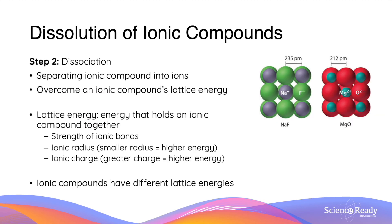In the second step, dissociation, we are separating ionic compounds into their individual ions. This means that we will need to overcome an ionic compound's lattice energy, which is the energy holding the lattice together. This is dependent on the strength of the ionic bonds, the ionic radius, and the ionic charge. The lattice energy is determined by ionic radius — if the radius is smaller, the ions are more tightly packed together, resulting in a higher energy.